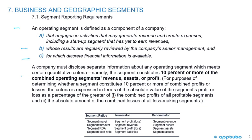A company must disclose separate information about any operating segment that meets certain quantitative criteria — namely, the segment constitutes 10% or more of the combined operating segments' revenue, assets, or profit. For determining whether a segment constitutes 10% or more of combined profits or losses, the criteria is expressed in terms of the absolute value of the segment's profit or loss as a percentage of the greater of: 1, the combined profits of all profitable segments, and 2, the absolute amount of the combined losses of all loss-making segments.